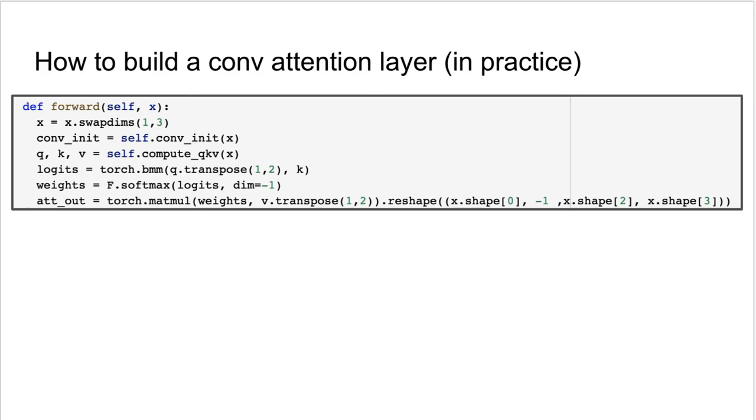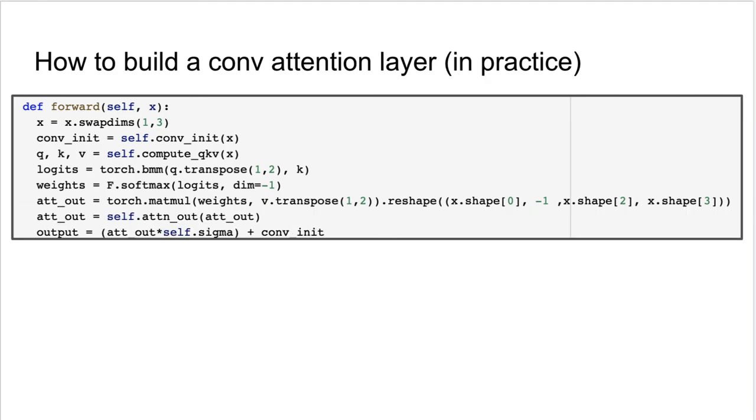Then, matrix multiplying with the value feature maps and reshaping back to separate the height and width will finally get us the result that goes through a final conv layer. Lastly, it is multiplied with sigma, a trainable scalar that is initially set to zero. This way, the network can gradually combine the information from the attention layer and take as much from it as it wants. The output is added to the initial output from before. This is helpful because the gradient has a highway back to the beginning of the layer preventing the vanishing gradient problem.